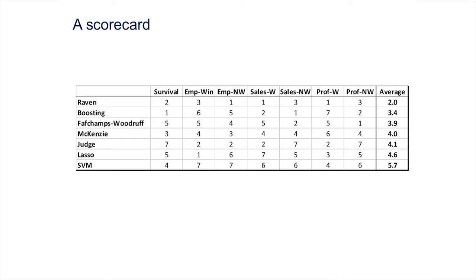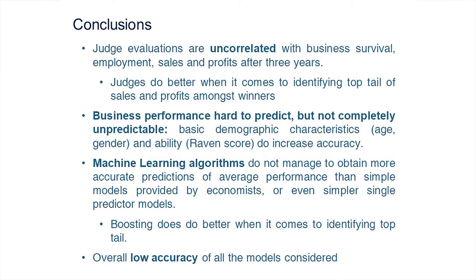You could argue that your preferred machine learning model might do slightly better — and you're welcome to try it. But basically none of these methods are working well. The judges' scores are almost uncorrelated with business survival, and at best the machine learning or judge scores detect maybe 15 to 20 percent of the top 100 firms. The main predictors that emerge are the Raven test, gender, and age — essentially a Silicon Valley model.